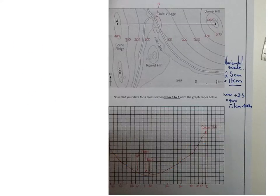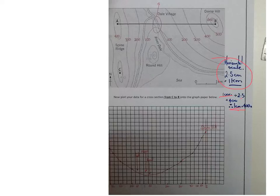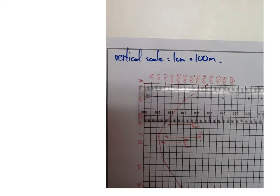So I've done that here: two point five centimetres equals one kilometre. We really want to get that down to a one-centimetre equals figure, because that's what we're going to use for the vertical scale. We take one kilometre, which equals one thousand metres, divide it by two point five centimetres, and that gives us four hundred. Therefore, one centimetre on our horizontal scale equals four hundred metres.